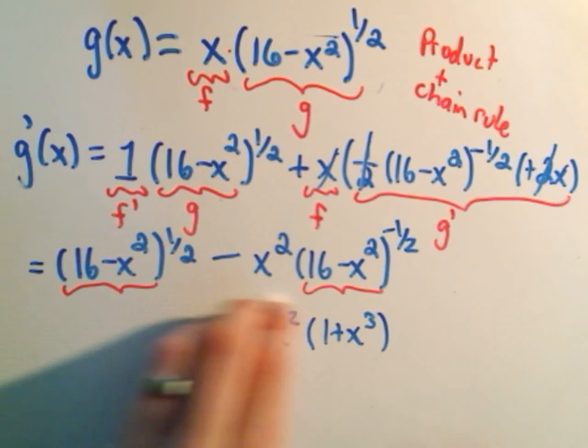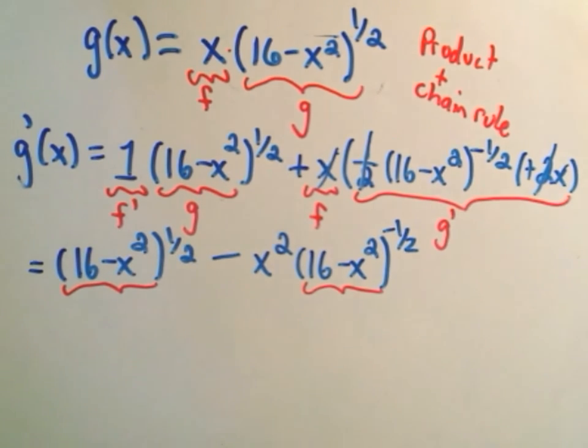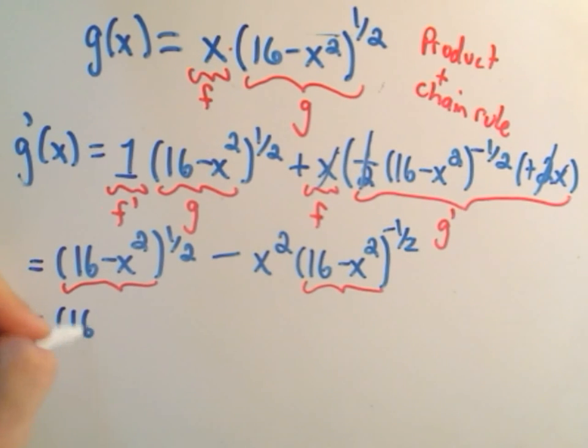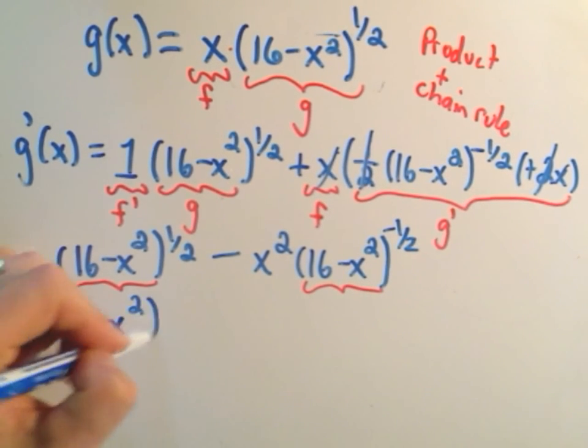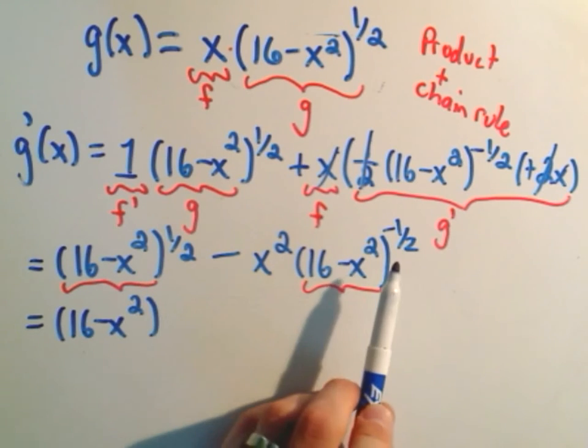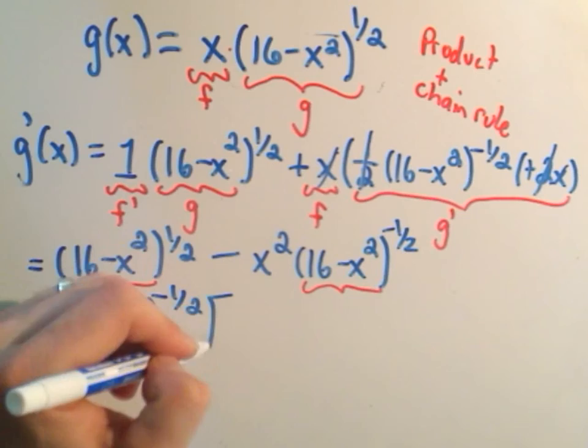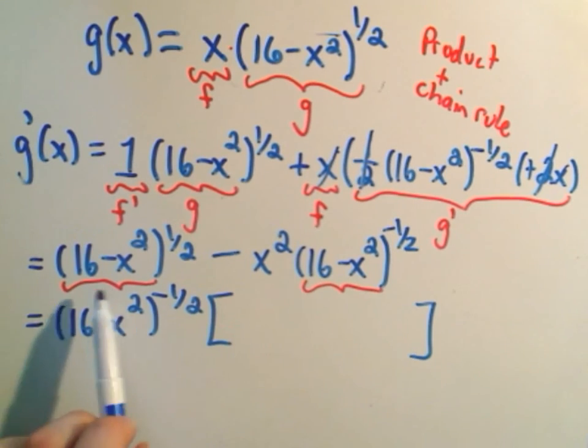So I see a 16 minus x squared. I'm going to factor that out. I factor out the smaller power. Well, one-half or negative one-half. Negative one-half is smaller. And then I have to put something back in brackets so that when I multiply it out, I get everything back.